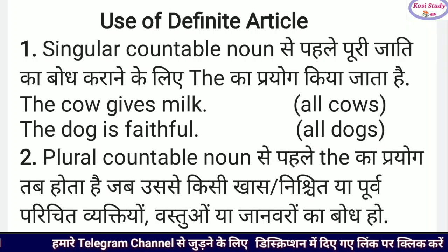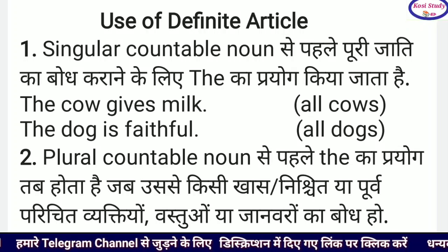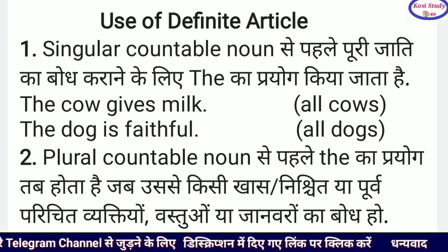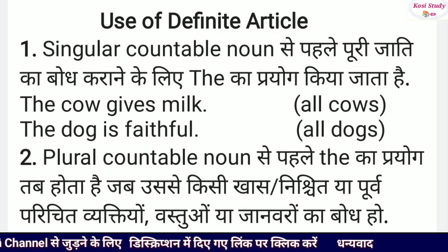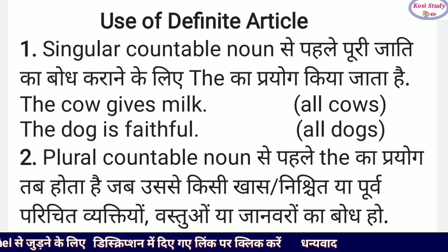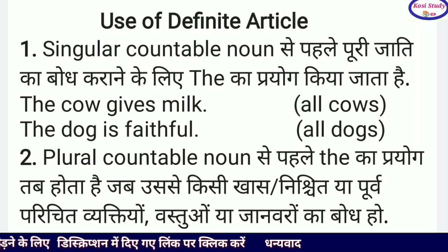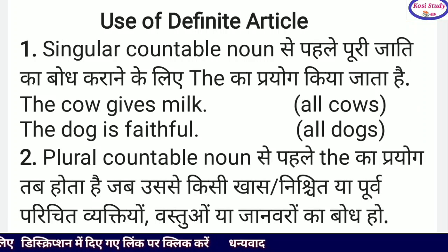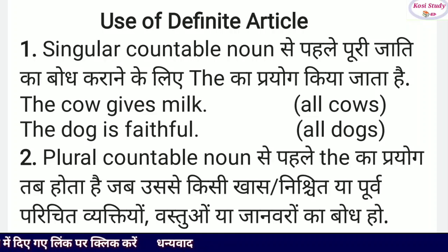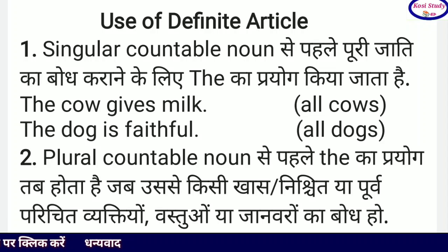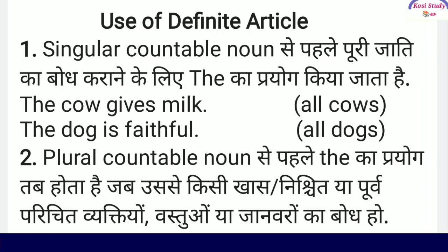तो पहला rule है: singular countable noun से पहले पूरी जाति का बोध कराने के लिए 'the' का प्रयोग किया जाता है। For example, 'The cow gives milk' — it means all cows give milk. गाय दूध देती है — इसका मतलब हुआ कि दुनिया की सारी गायें दूध देती हैं। Similarly, 'The dog is faithful' — कुत्ता वफादार होता है — it means all dogs, यानि दुनिया के सारे कुत्ते वफादार होते हैं।